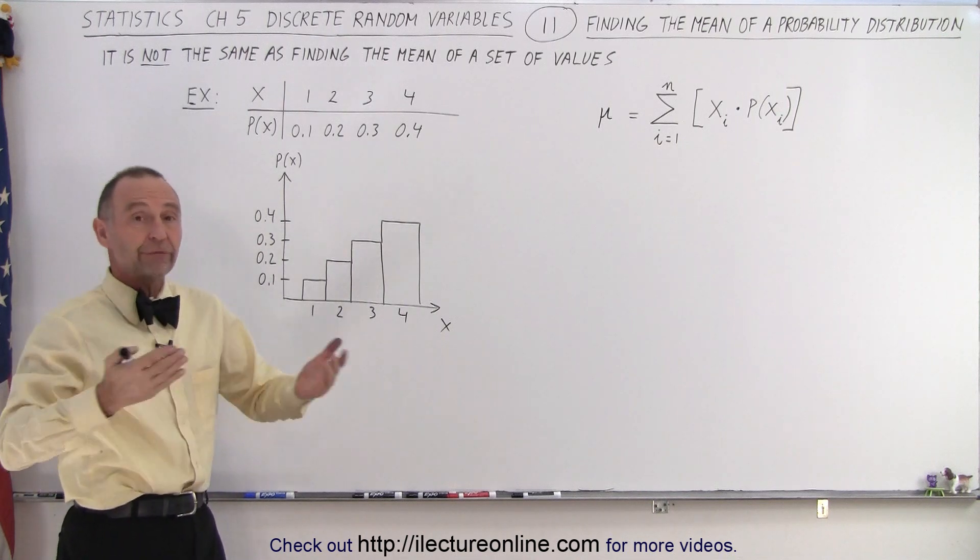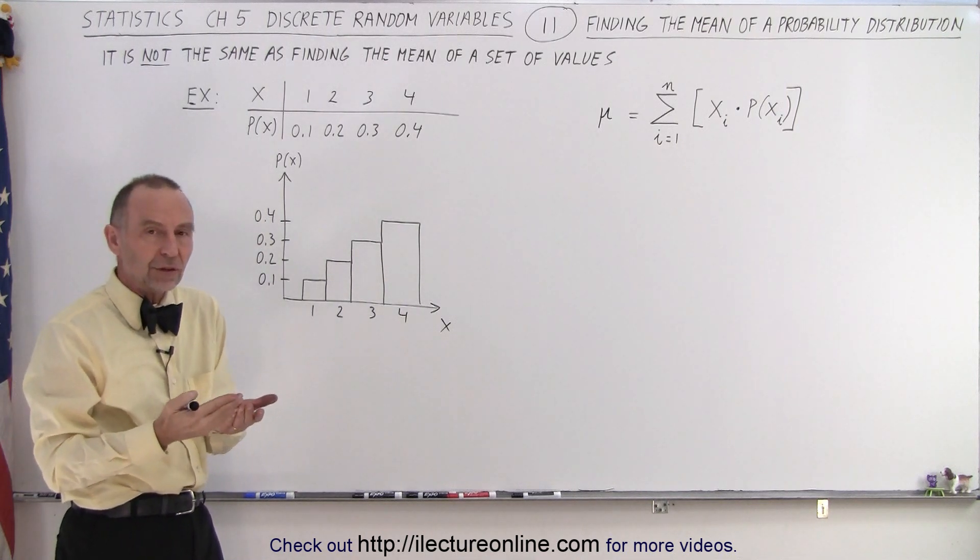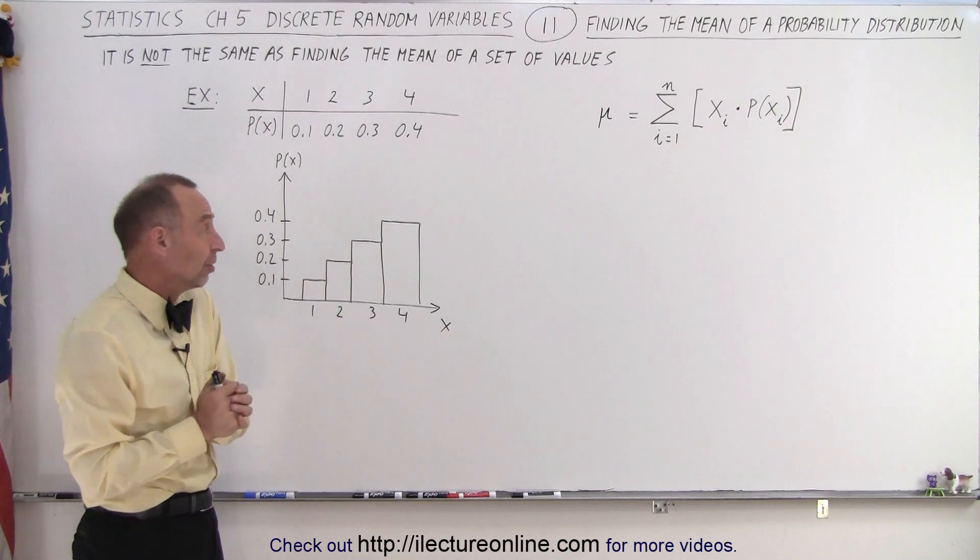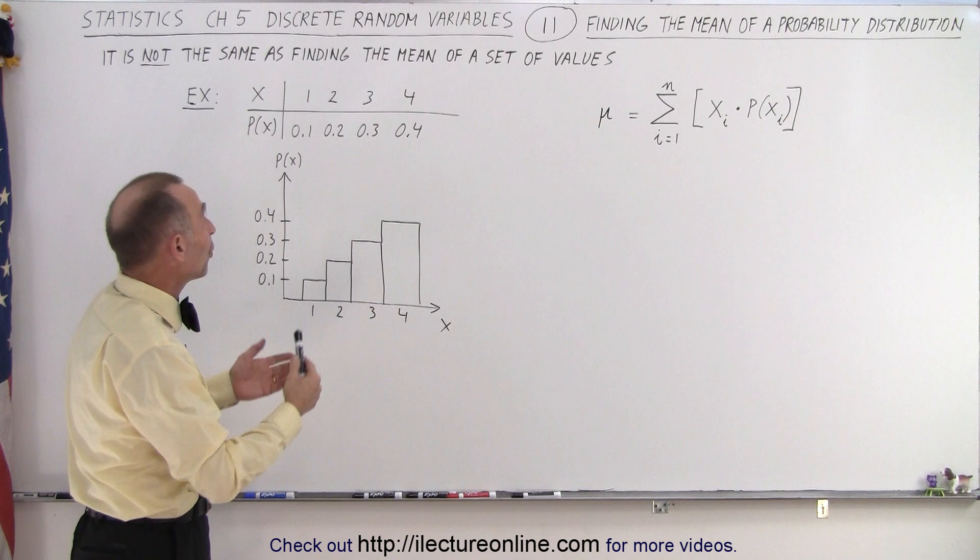For example, if we have four values, the value for x that could be 1, 2, 3, or 4, and we take the mean or the average of those values, well then we simply get 2.5.